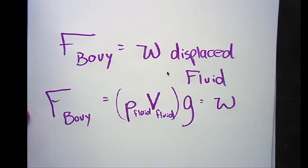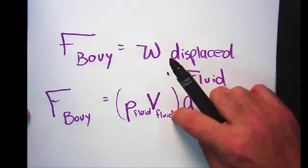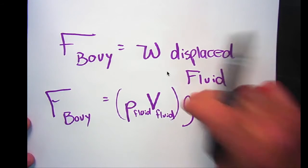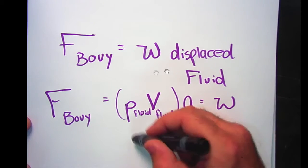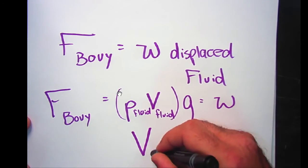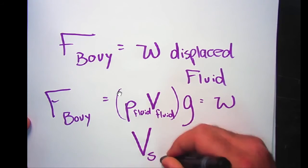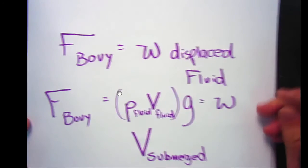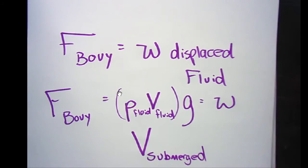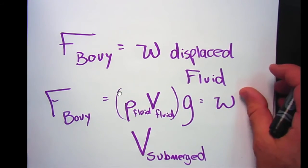We need to know three things: the density of the fluid that the brick is in, the volume of that displaced fluid, and the acceleration due to gravity. Another way to think of the volume of this displaced fluid is the volume of the object that is submerged. If the whole thing sinks to the bottom, then all of its volume is submerged. If it's floating, then only part of its volume is submerged.